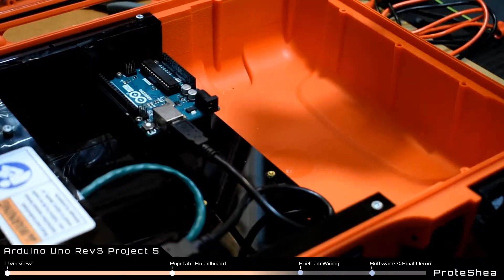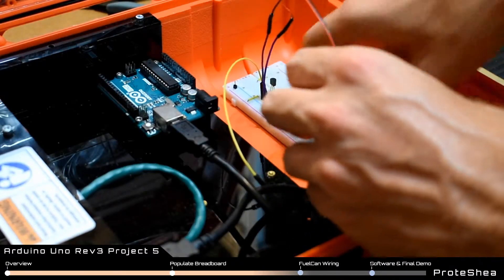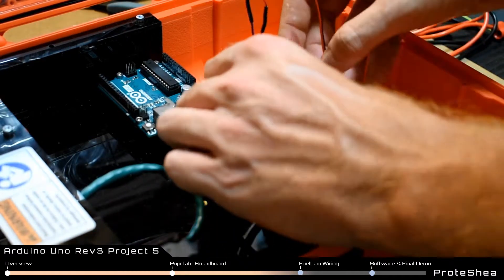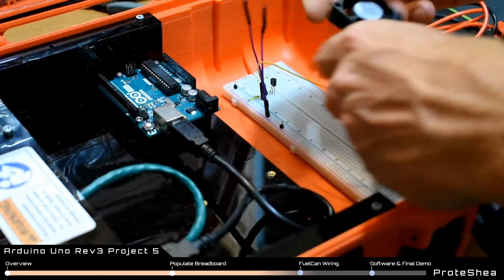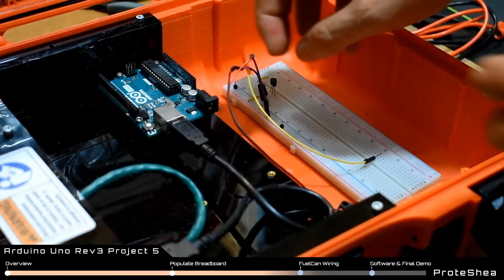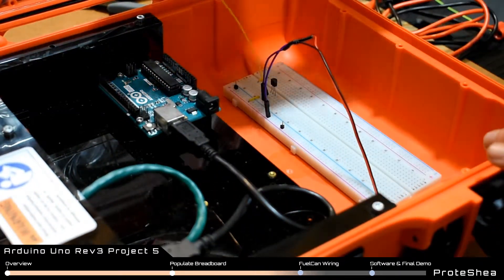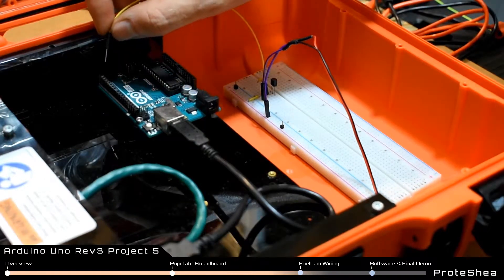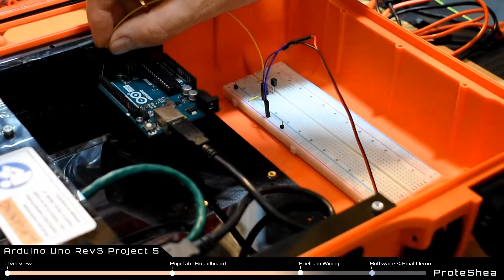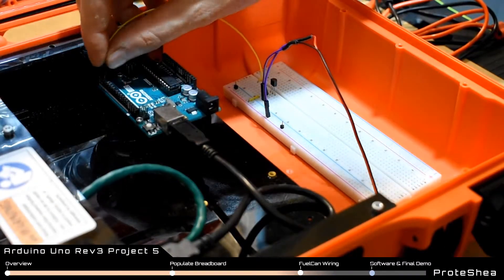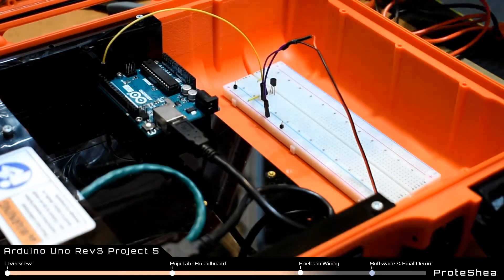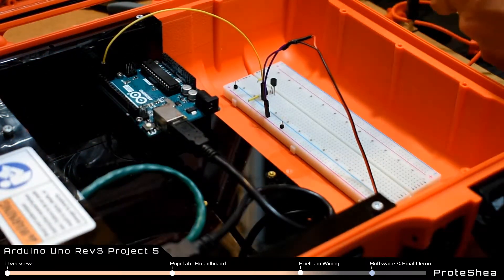Next, place the breadboard in the bottom storage compartment of the fuel can and plug the other side of the male-to-male jumper into pin 2.